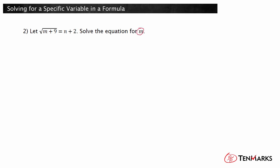The inverse operation of finding the square root of an expression is squaring the expression. This leaves you with m plus 9 equals n plus 2 squared. Expand the binomial n plus 2 squared by multiplying. You get m plus 9 is equal to n squared plus 4n plus 4.